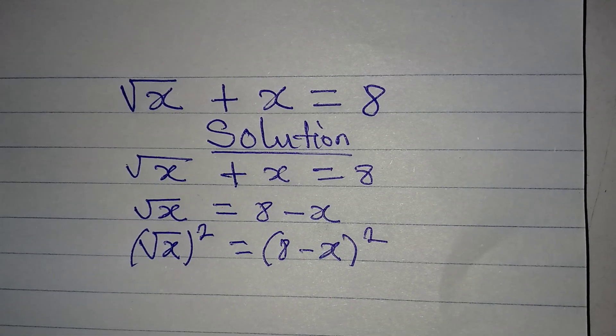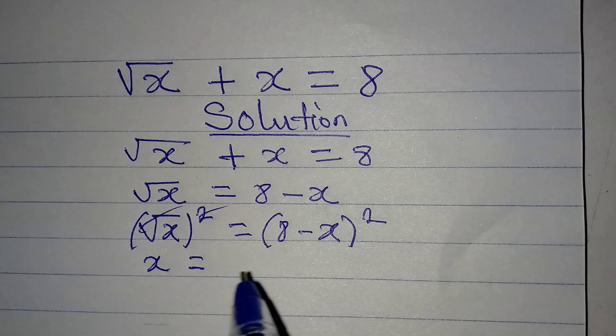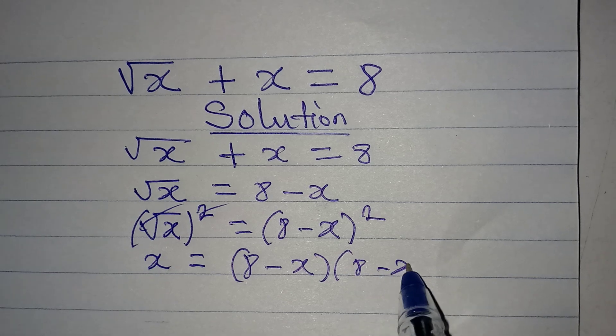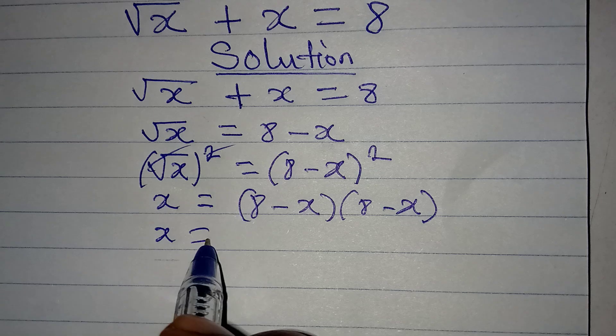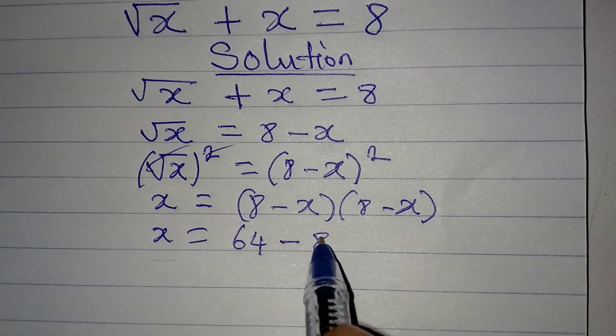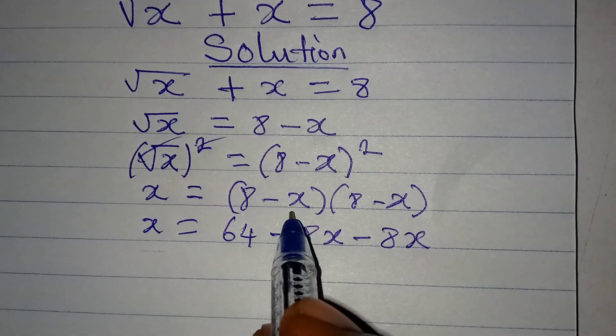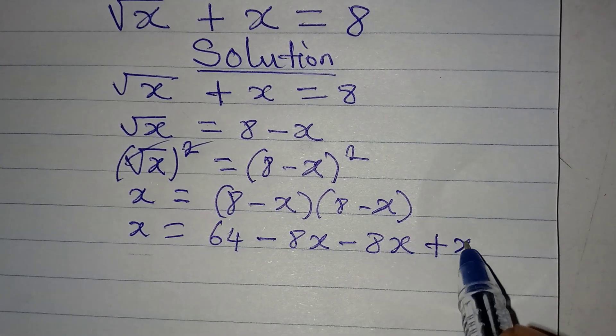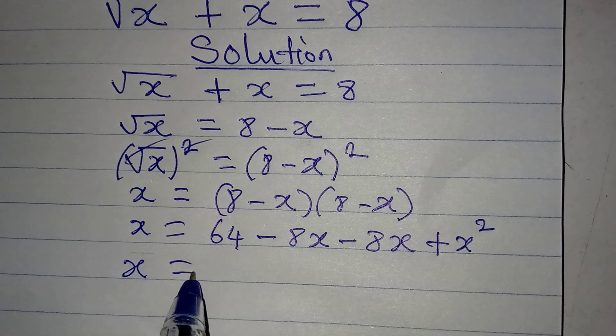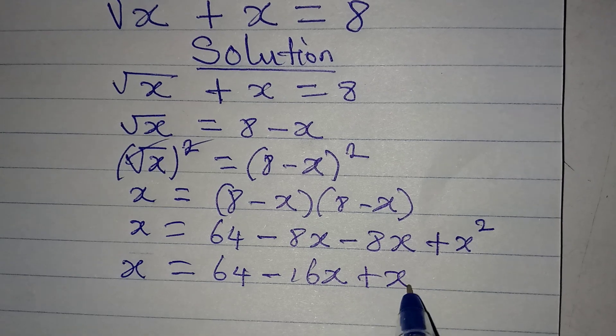This square root and this will cancel. So x will be alone and it will be equal to 8 minus x multiplied by 8 minus x. So x here will be equal to 8 times 8 is 64, then 8 times minus x is minus 8x, minus x times 8, that will be minus 8x. And then minus x times minus x will give us plus x squared.